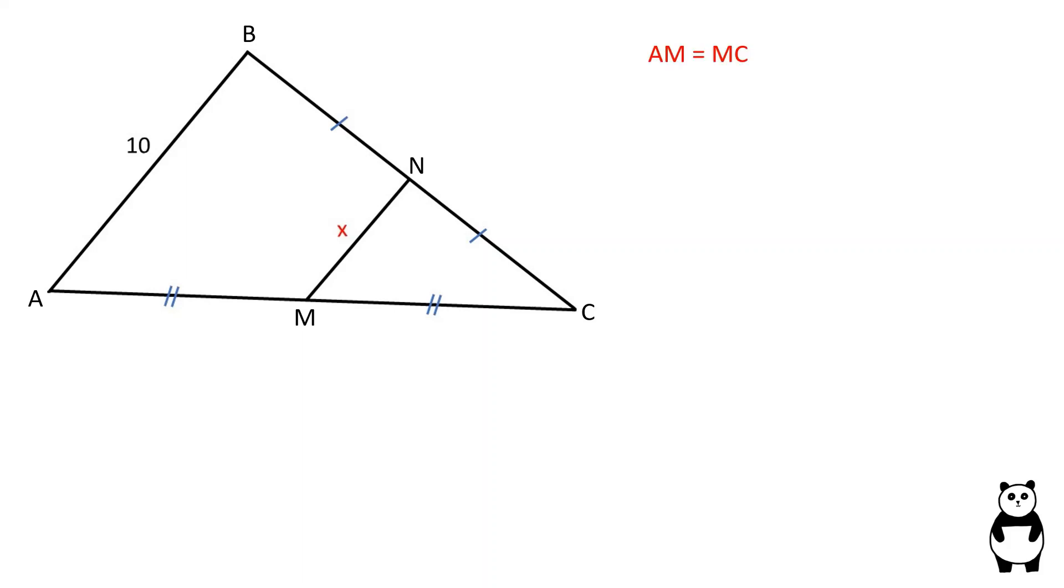Let's solve this problem. Since AM is equal to MC and BN is equal to NC, MN is a mid-segment of the triangle ABC.